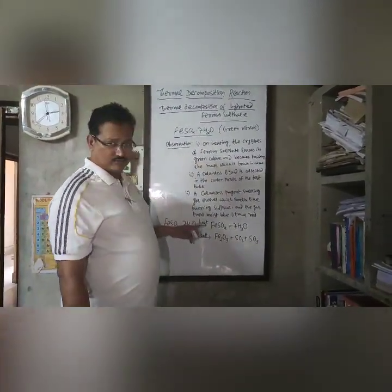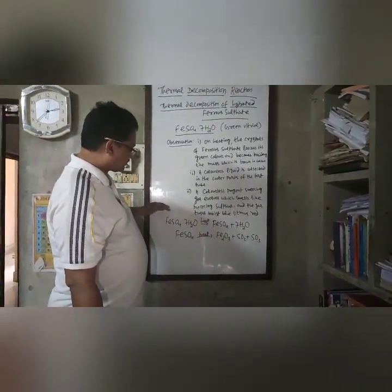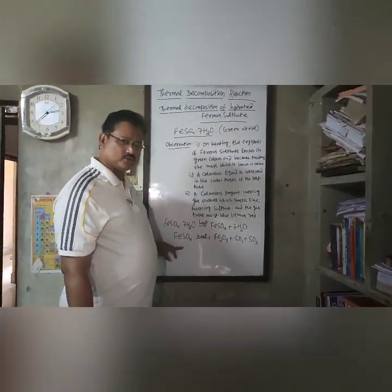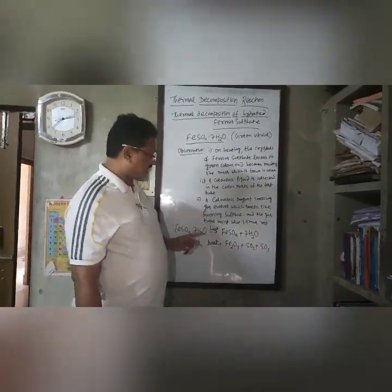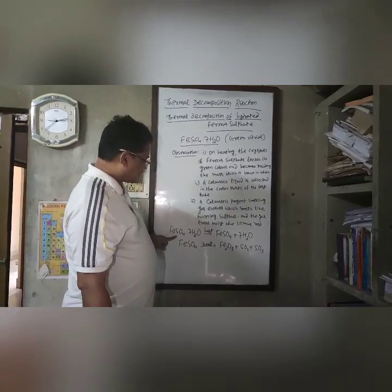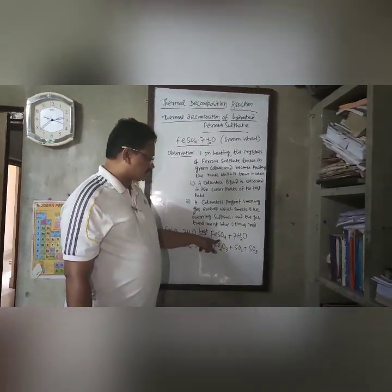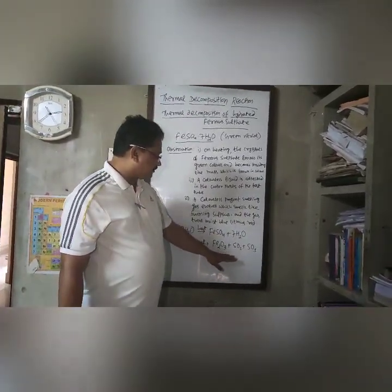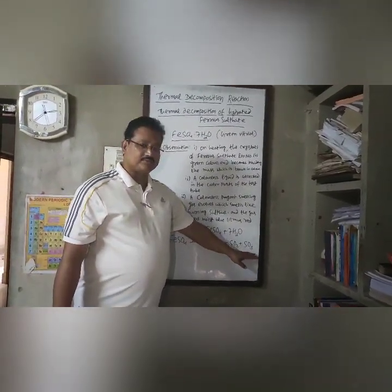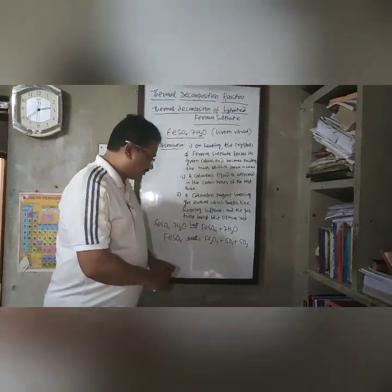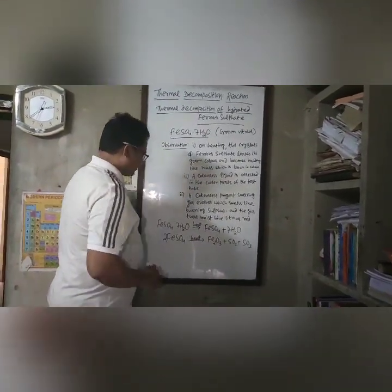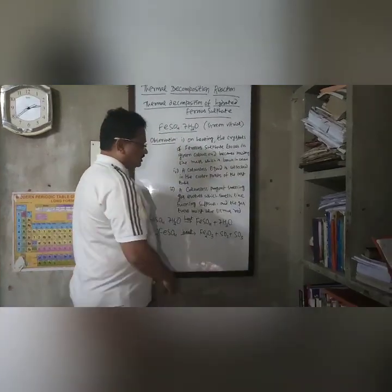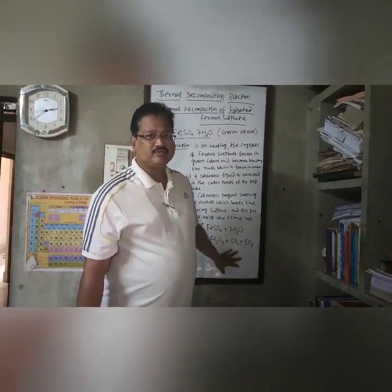Coming back to the chemical equation, this reaction takes place in two stages. First, hydrated ferrous sulfate decomposes to anhydrous ferrous sulfate and water is liberated. Then the anhydrous ferrous sulfate is heated to give ferric oxide and a mixture of gases — sulfur dioxide and sulfur trioxide evolve. On balancing, 2FeSO₄ produces Fe₂O₃, SO₂, and SO₃. The major percentage of gas evolved here is sulfur dioxide. This is one example of thermal decomposition of ferrous sulfate.